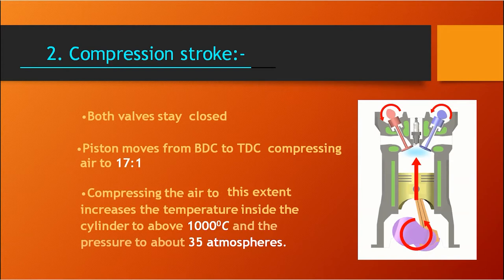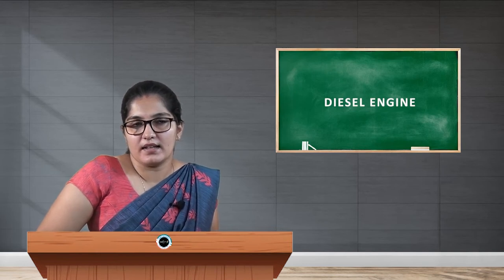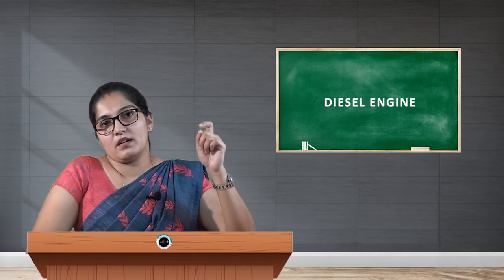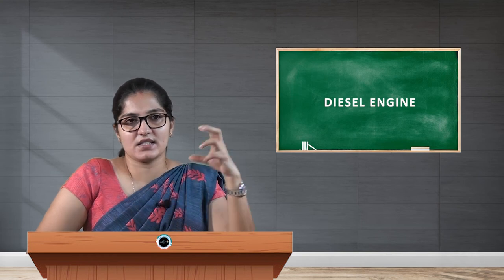Such a high compression ratio could be achieved only in a diesel engine, not in a petrol engine. Compressing the air to this extent increases the temperature inside the cylinder to above 1000 degrees Celsius and the pressure to a maximum of 35 atmospheres. Due to this, the air will be at a very high temperature. So now, instead of a spark, if the fuel is injected into this chamber, it will catch fire.